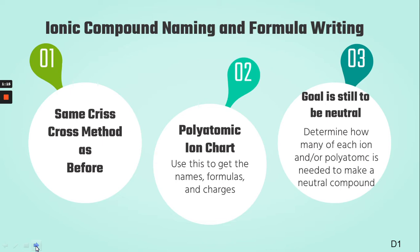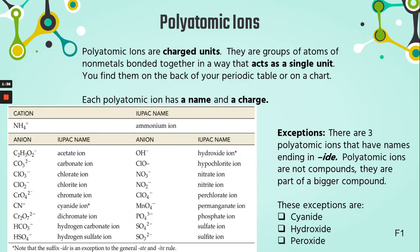Just like last week, our goal when writing our formulas is to make a neutral compound, because these polyatomics are ions — they have charges, and we're still trying to get those charges to add up to zero to make a neutral combination. So you're going to see a lot of the same thing again.